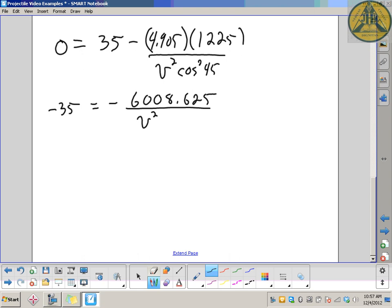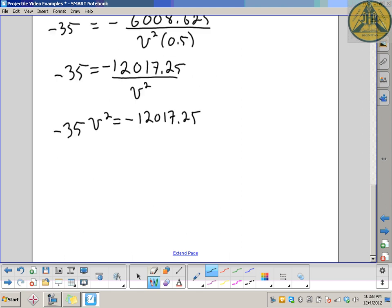6008.625. I'm just going to keep all my digits for v squared cos squared 45. I'll work that out right now. Cosine of 45 and then square it. Cosine of 45 squared, exactly 0.5. So, one more little step of simplifying. Negative 35 equals 6008.625 divided by 0.5, 12017 and a quarter. Cross multiply up. Oh, I forgot my negative sign there. Don't forget that.